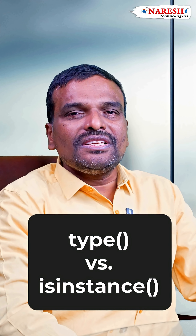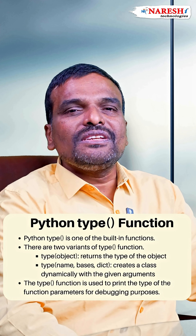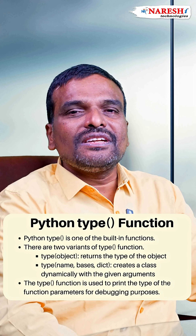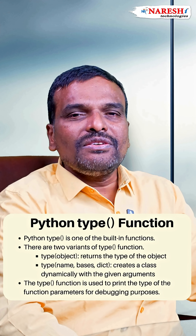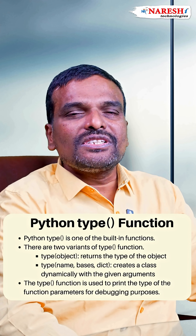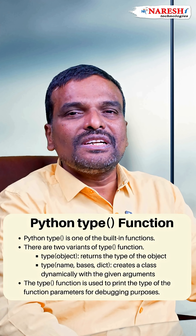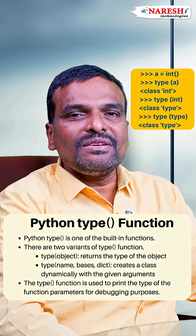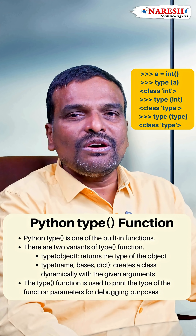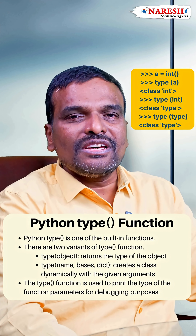What is the difference between the type function and isinstance function in Python? The type function returns the type of an object — specifically, the name of the class to which that object belongs. If you pass any object to type, it returns the class name of that object.